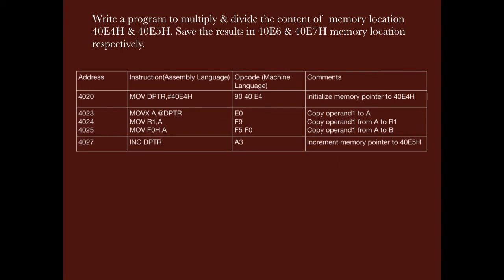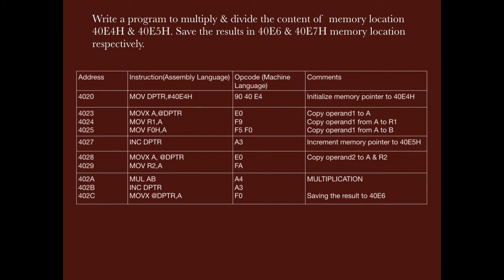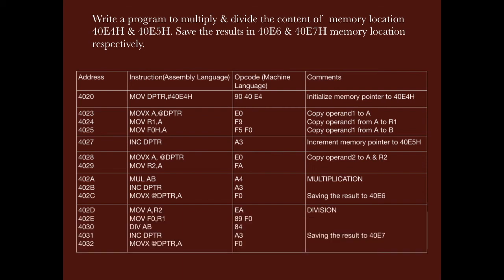The first instruction initializes the memory pointer to 40E4H, then moves the content of external memory to the accumulator, saved also in R1 and register B (RAM address F0H). Incrementing DPTR takes us to 40E5H; its contents are moved to the accumulator and to register R2. After that the multiplication operation is performed between register A and register B — that is the reason the first operand was initially moved into B and the second operand into A. Incrementing DPTR moves the pointer to 40E6H, where the multiplication result is saved using MOVX.